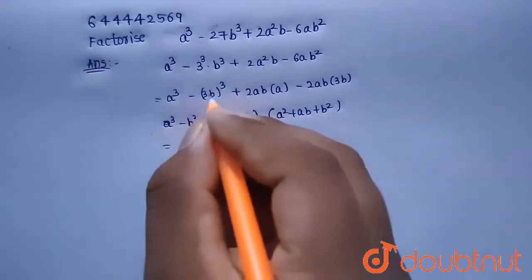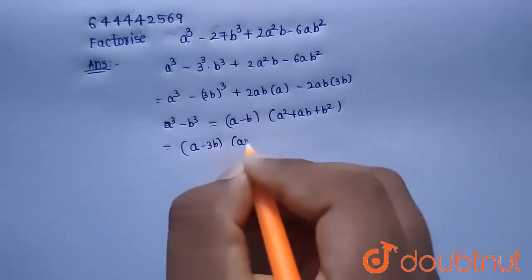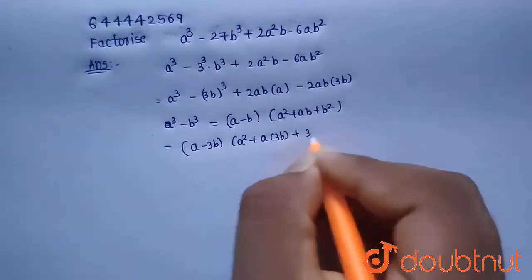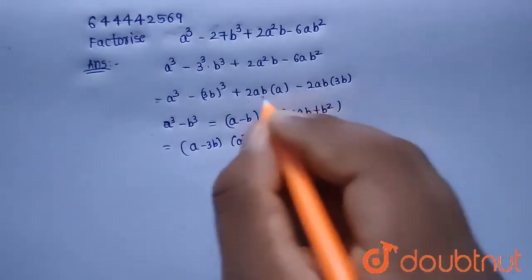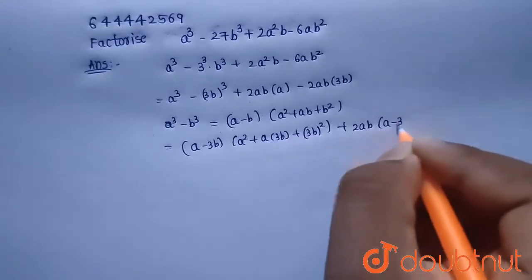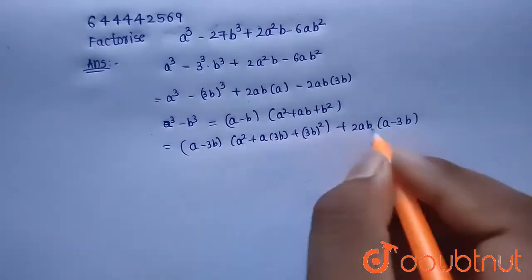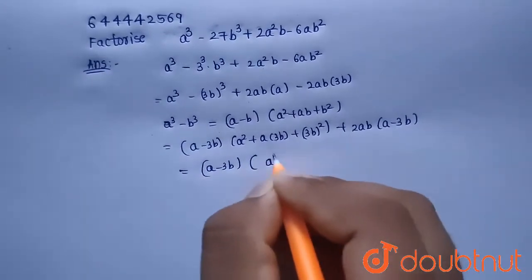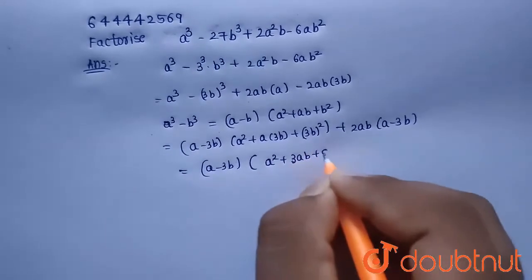So I can write a³ minus (3b)³ as (a minus 3b)(a² plus 3ab plus 9b²), plus taking 2ab common from the last two terms: 2ab(a minus 3b). So the expression becomes (a minus 3b)(a² plus 3ab plus 9b²) plus 2ab(a minus 3b).